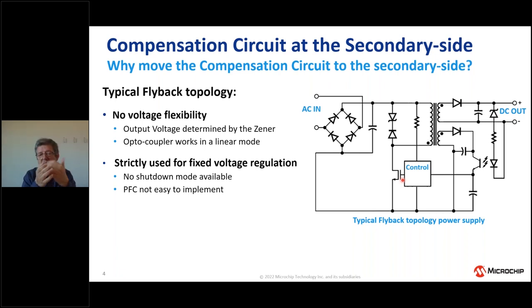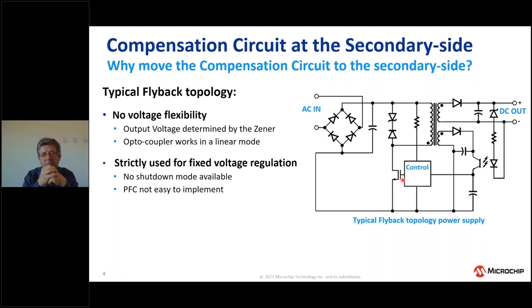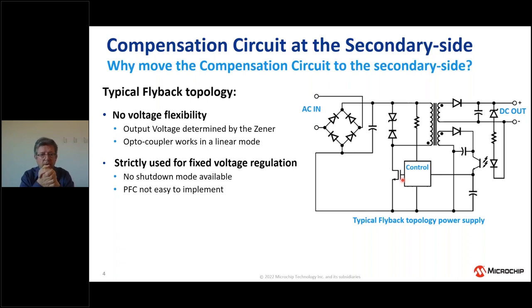There is an optocoupler used to transfer the error signal from the secondary side to the primary side. In some cases, optocouplers working in linear mode are subject to aging, so the behavior of your circuit may change over time. Above all, with this solution you do not have the possibility to implement power factor correction, and shutdown is not always possible to implement.